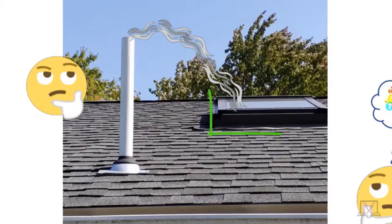You have a skylight. If it was 10 feet or more away, you're okay. If it's within 10 feet — which this one was, about seven feet — it's a violation of code.